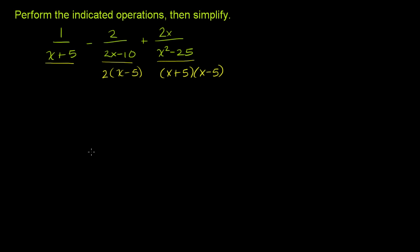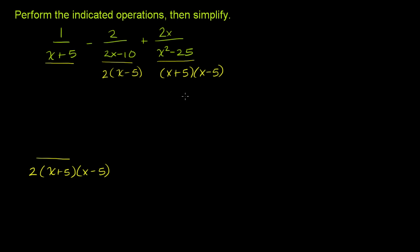If we want to find a least common multiple, let me rewrite each of these with that common denominator. The least common multiple is going to have x plus 5 in it, it's going to have to have a 2 in it, and it's going to have an x minus 5 in it. We've already covered all those factors, so that right there is our common denominator.